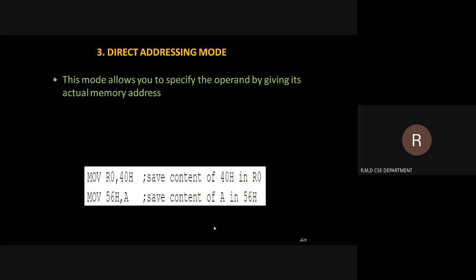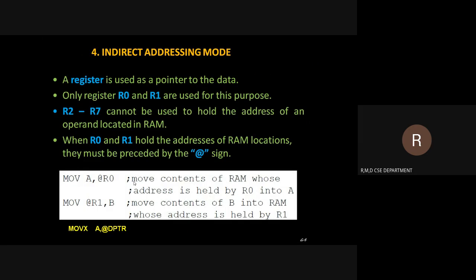The third type is called the direct addressing mode. In direct addressing mode, it allows you to specify the operand by giving the actual memory location itself. For example, MOV R0, 40H — 40H is the memory location. Whatever content is in that particular location is directly assigned to the register. We are specifying the location directly, so 40H is nothing but a memory location.